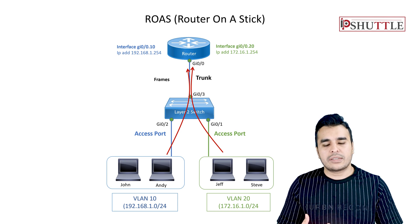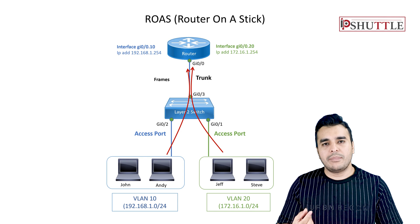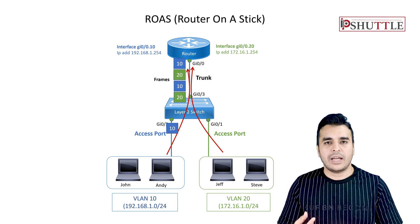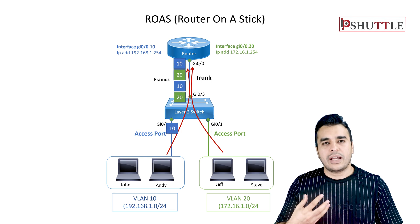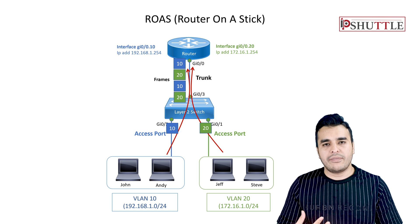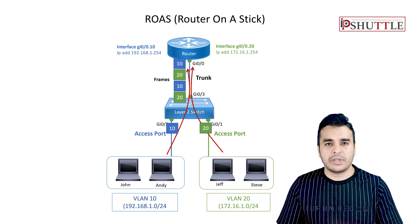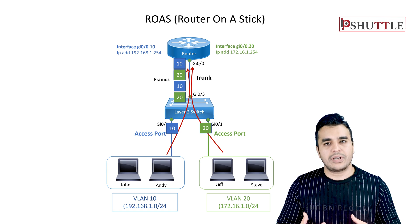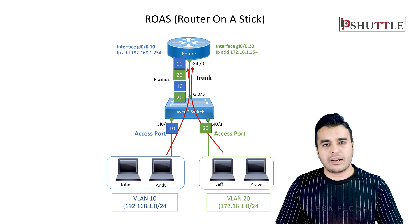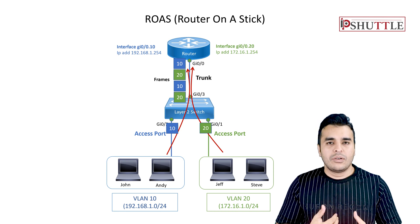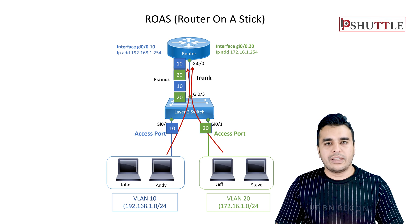When the router sends the reply, each frame will contain the packet with the VLAN header, and the switch will be able to identify where this frame is going. That's how the router does this whole inter-VLAN routing. We will configure it in the lab.